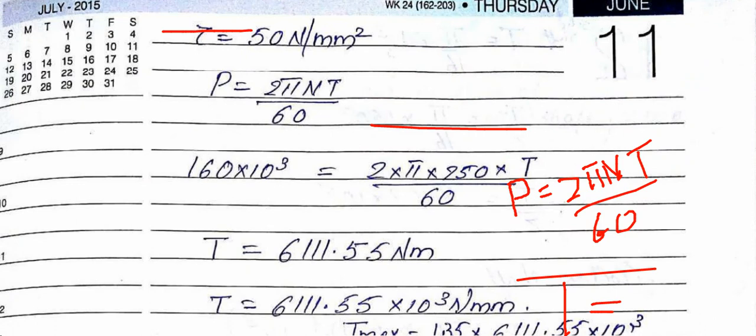T_mean equals 6,101.55 newton-meters. The unit of power is newton-meter per second. In the formula P = 2πNT/60, N is in revolutions per minute, so we divide by 60 to convert to seconds.